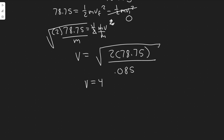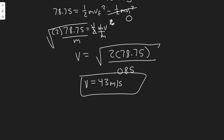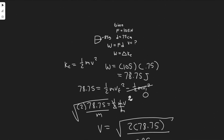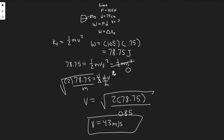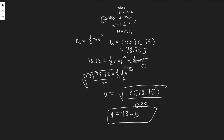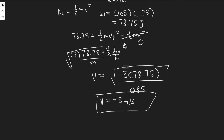So v equals 43 meters per second — that's the velocity, which is what they asked for: the speed of the arrow as it leaves the bow. All we did was relate work (force times distance) to the work-energy theorem, knowing kinetic energy equals one half mv squared. The key was relating all the variables using the formulas from this chapter.